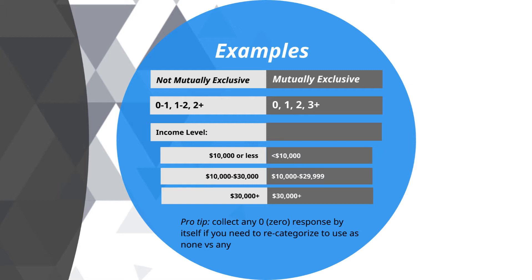Another common example of non-mutually-exclusive categories is income levels. Most people don't know their exact income to the dollar, so income level is often captured in ranges. On the left you'll see $10,000 or less, then $10,000 to $30,000, then $30,000 plus — showing the same problem as the prior example. If you are at exactly $10,000 or $30,000, which box do you check?